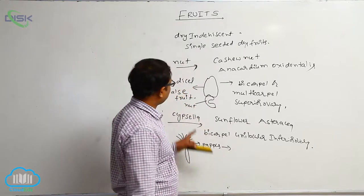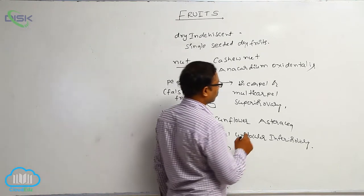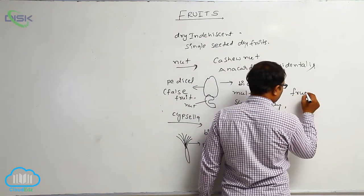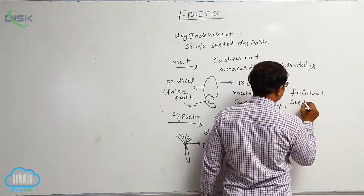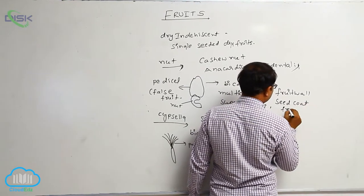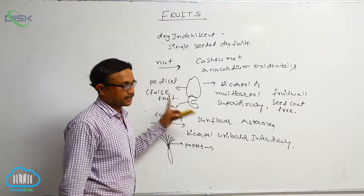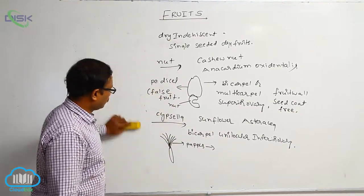In this one, pedicill is converted into the false fruit. True fruit is that nut. Fruit wall means pericarp. Fruit wall plus seed coat - both are free condition. Fused condition is karyopsis. Free condition in a nut. These are the dry indehiscent fruit.